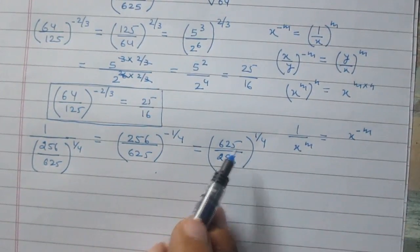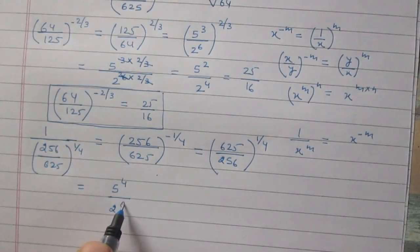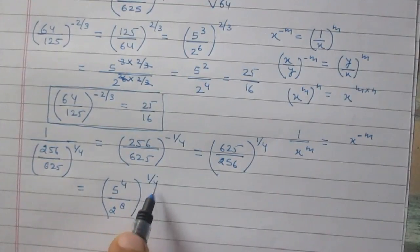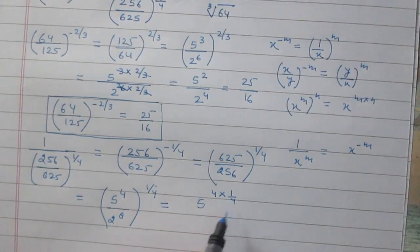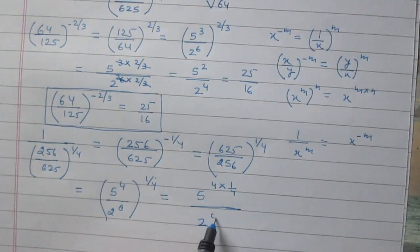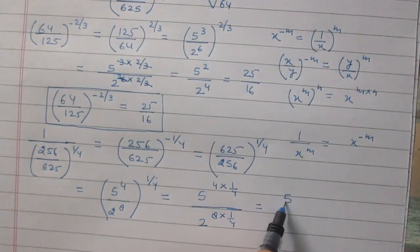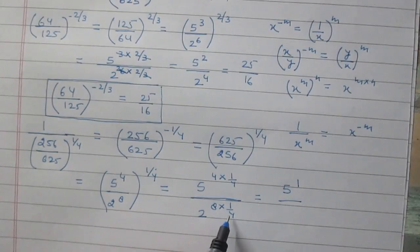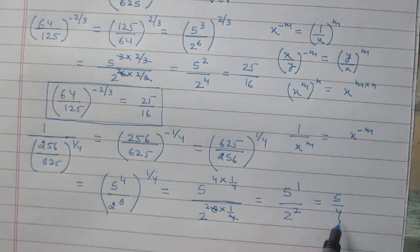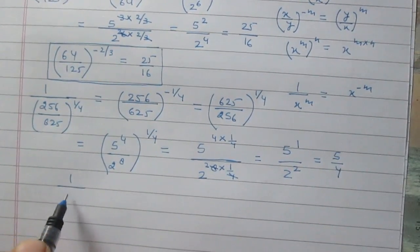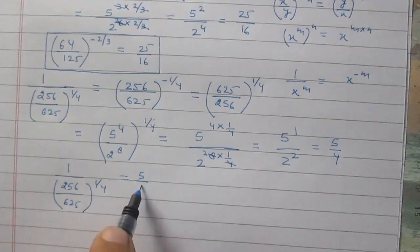Now, 625 is equal to 5 raised to the power 4 and 256 is equal to 2 raised to the power 8, then whole raised to the power 1 by 4. Using the power rule, we can write it as 5 raised to the power 4 multiplied by 1 by 4, divided by 2 raised to the power 8 multiplied by 1 by 4. 4 multiplied by 1 by 4 gives 1, so in the numerator we have 5 raised to the power 1. 8 multiplied by 1 by 4 gives 2, so we have 2 raised to the power 2, which is 4. Therefore, 1 upon 256 divided by 625 raised to the power 1 by 4 is equal to 5 by 4.